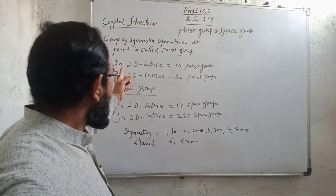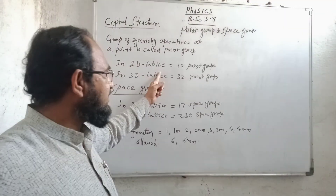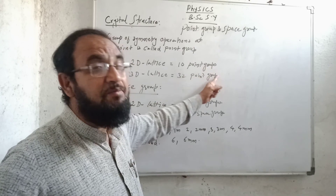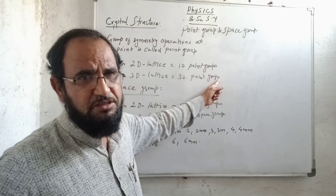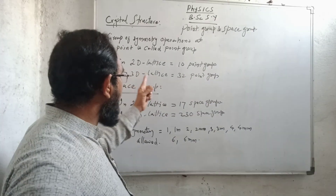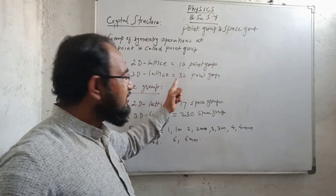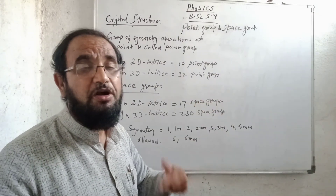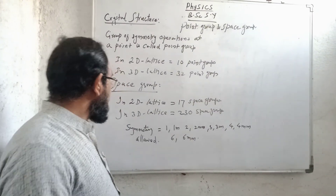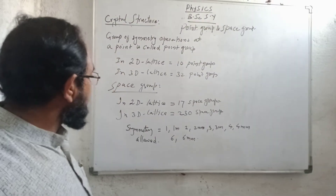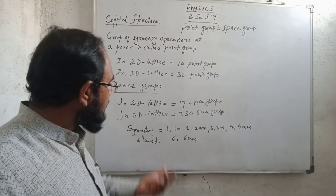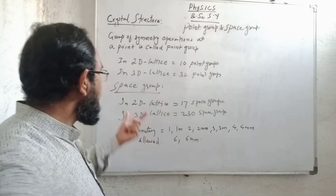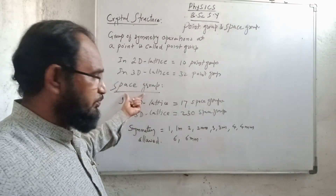In a two-dimensional lattice, we have 10 point groups. And in a three-dimensional lattice, we have 32 point groups. We can also say that there is a space group.